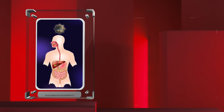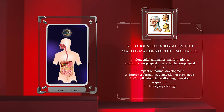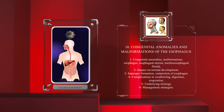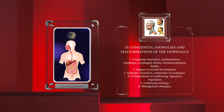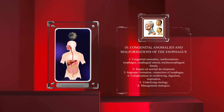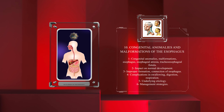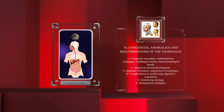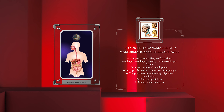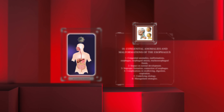Congenital anomalies and malformations of the esophagus, such as esophageal atresia and tracheoesophageal fistula, have a significant impact on normal development. These conditions involve improper formation or connection of the esophagus, leading to complications in swallowing, digestion, and respiration. Understanding the underlying etiology and management strategies for these anomalies is crucial to ensure optimal outcomes for affected individuals.